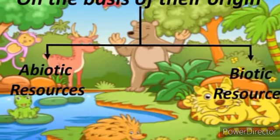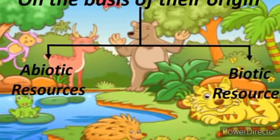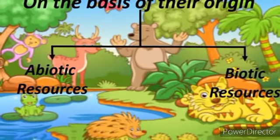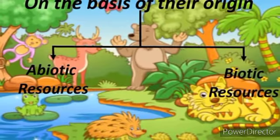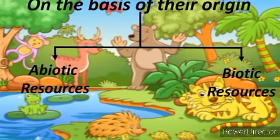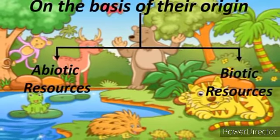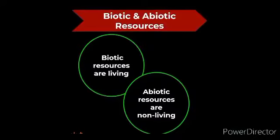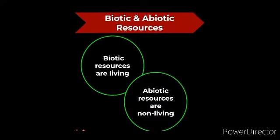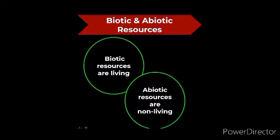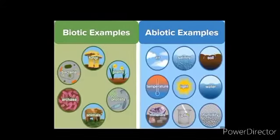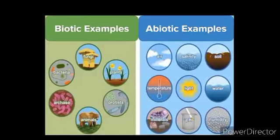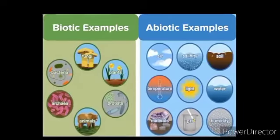On the basis of origin, natural resources are classified into biotic and abiotic resources. Living things such as plants and animals are biotic resources, while non-living things such as land, water, and air are abiotic resources.